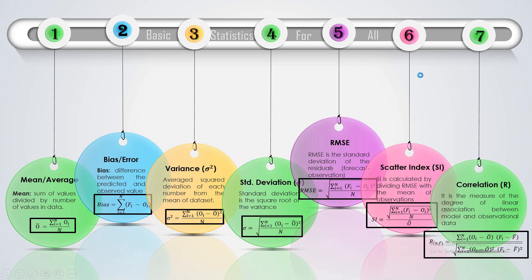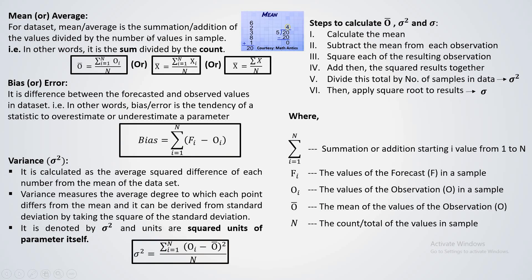Now we will see each one in detail. Coming to mean or average — in simple terms, it is the sum divided by the count. Here the sum of all these numbers is 20: that is 6 plus 2 plus 3 plus 8 plus 1. And how many numbers are there? The count is 5. So 20 divided by 5 equals 4 — that is the mean.